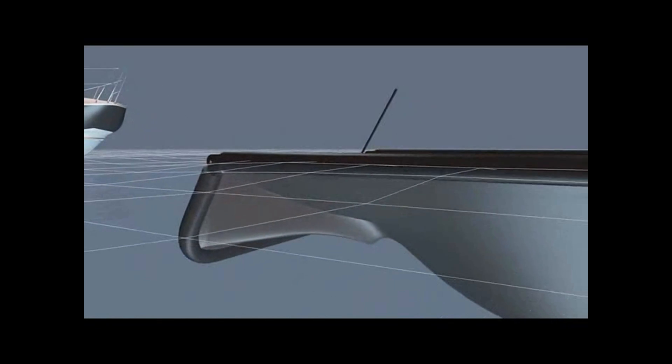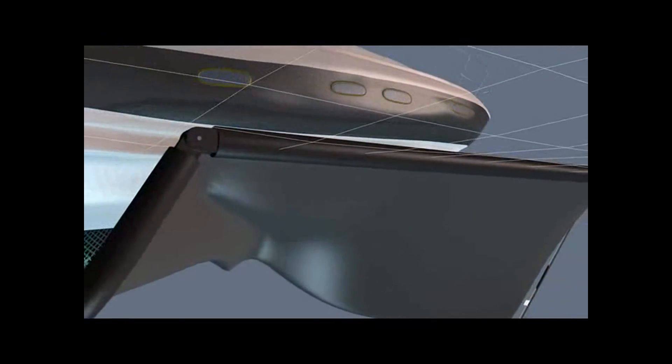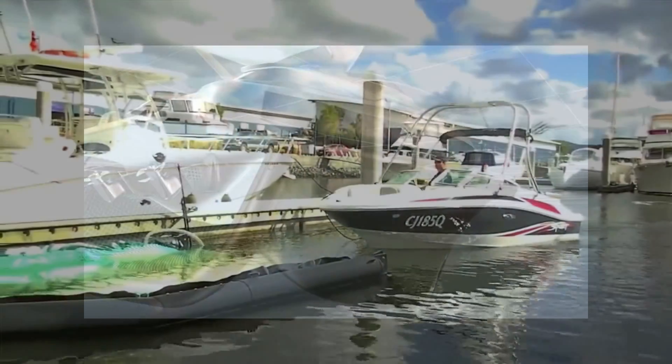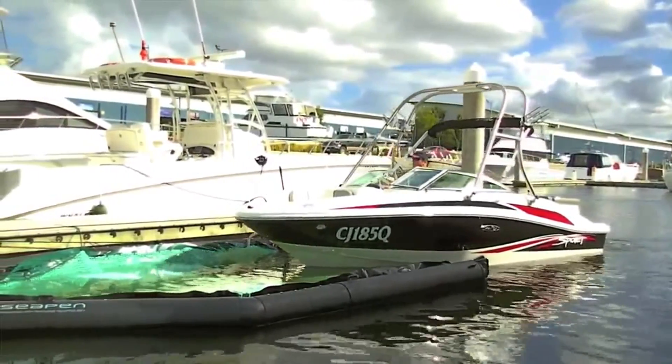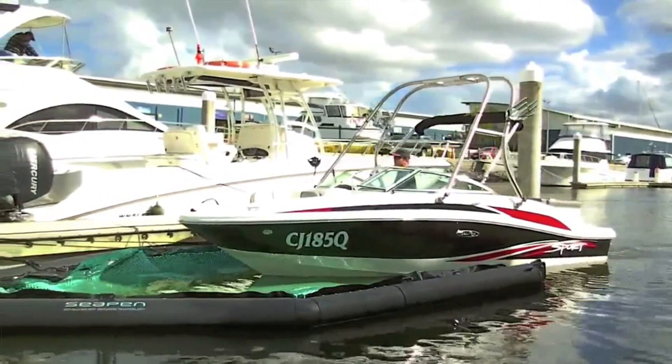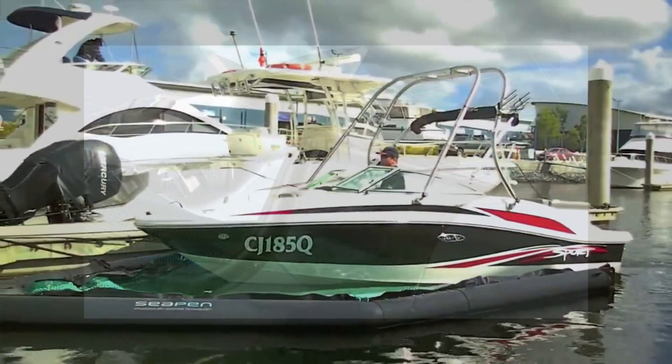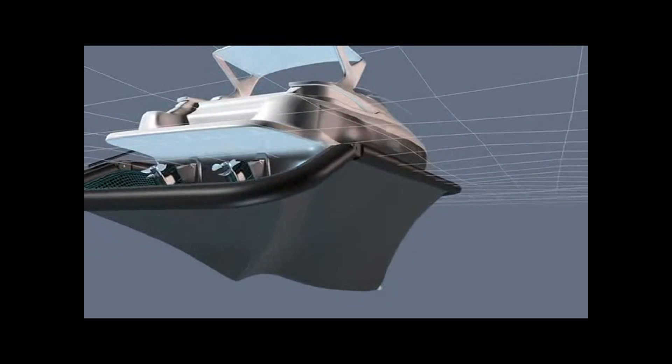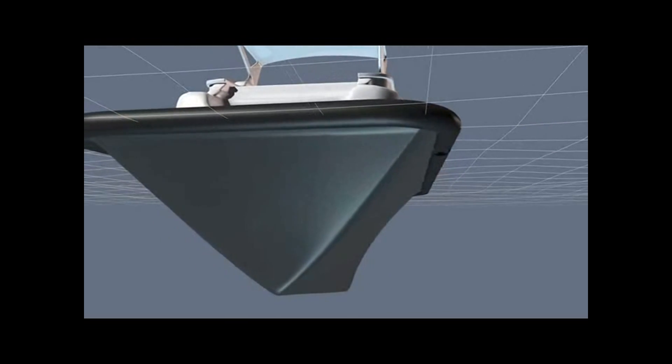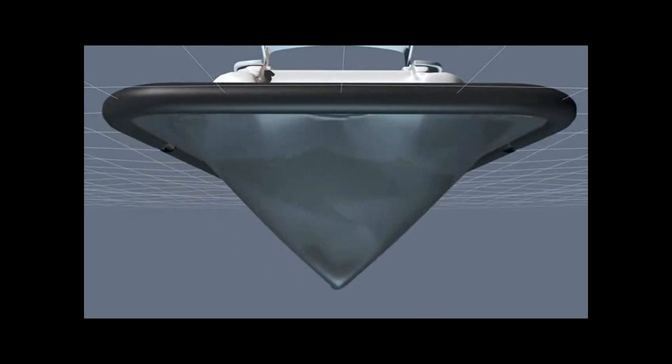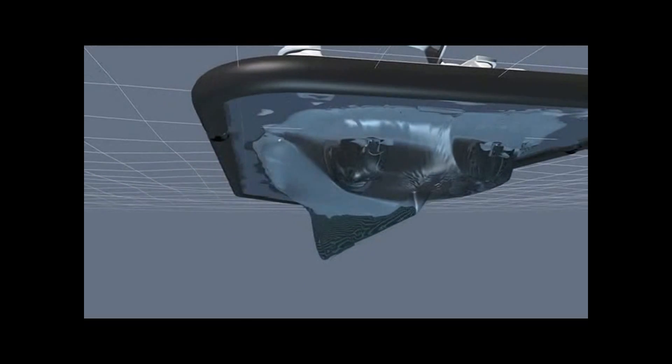On either side of the frame there is a hinge that allows the back section of the pen to lower open at the stern to allow you to glide the boat in and out. Air is pumped into the frame until it floats up around the boat, creating an isolated pool of water.